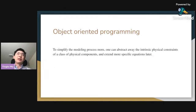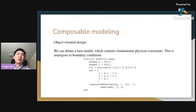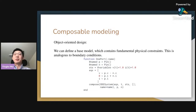To simplify the modeling process, we can use the idea of object-oriented programming, abstracting away the intrinsic physical constraints of a whole class of components and extending the base model with specific coefficients later. An abstraction for all simple circuit models with two terminals is that the voltage drop equals the voltage difference between the positive and negative terminals, the current is conserved (positive plus negative terminal current equals zero), and the component voltage equals the positive terminal's voltage — analogous to boundary conditions in PDEs.